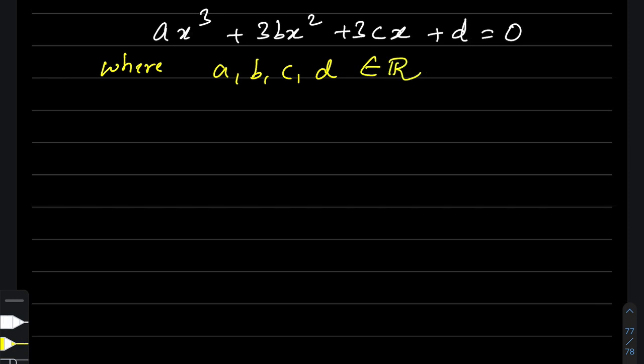In this case, there is a discriminant associated with two terms. First, I'll talk about a term called h. This h is given by ac − b². The coefficient of x is 3c, take the c; the coefficient of x³ is a; the coefficient of x² is 3b, take the b — making the term h = ac − b².